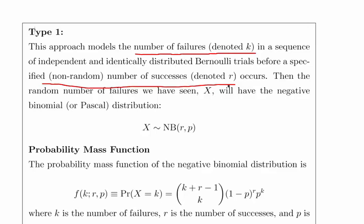Does that sound like our question? We'll wait until we see the second one. Then the number of failures X will have a negative binomial or Pascal distribution. Essentially what we're looking at is the number of failures before you get a certain amount of successes.